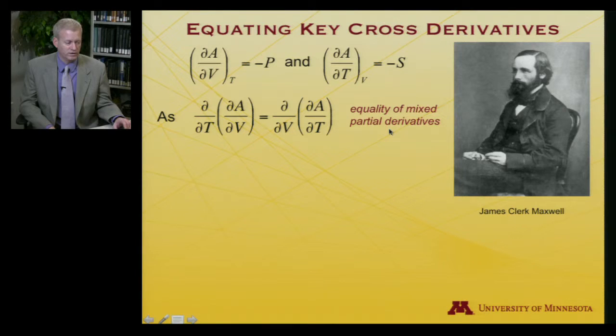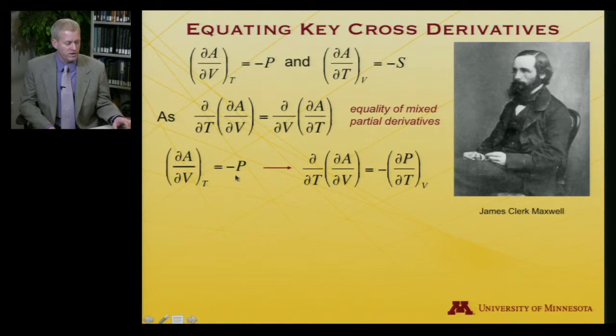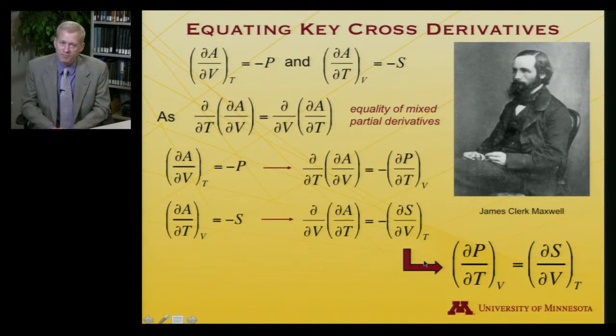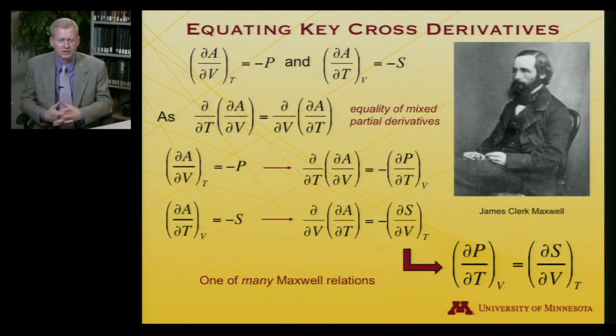That's the equality of the mixed partial derivatives. And so if I look at partial A partial V, which is minus the pressure, then taking its partial derivative with respect to T is minus partial P partial T at constant volume. I do the same thing working with negative S as the partial derivative of A with respect to T. I take its derivative with respect to V, and I get this quantity. And by the equality of the mixed partials, I have this relationship. That the change in pressure with respect to the change in temperature when evaluated at a constant volume will be equal to the change in entropy with respect to the change in volume when evaluated at a constant temperature.